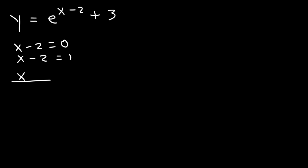And we're going to make a table. So the x values that we're going to choose are, if you solve for x, it's going to be 2 and 3. The horizontal asymptote is based on this number. So y equals 3 is the horizontal asymptote. Now we don't need this part anymore.